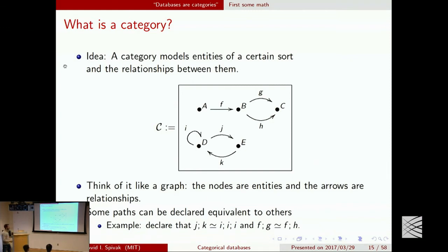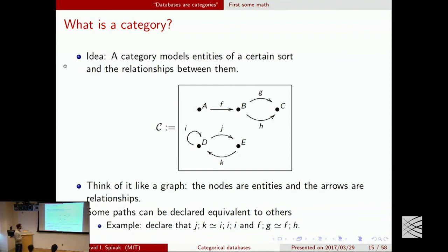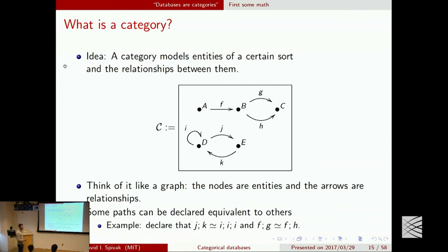But a category is more than just a graph. It's a graph plus one extra piece of information: the ability to declare two different paths through the graph to be equivalent. If you write down a graph and declare what you want equivalent to what, you've given a category. You could say only a path is equivalent to itself, or you could declare that FG is the same as FH even though G is different from H, or that JK equals III — those two paths are equivalent.